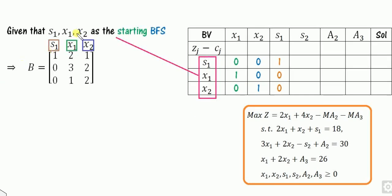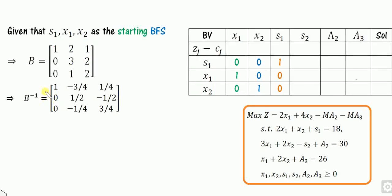The starting BFS is given as S1, X1, and X2. Write matrix B. The first column corresponds to S1, which is 1, 0, 0. The second column corresponds to X1, which is 2, 3, 1. The third column corresponds to X2, which is 1, 2, 2. Based on this B, you can find B inverse. There are two methods to find the remaining four columns: compute B inverse of S2, B inverse of A2, and so on.